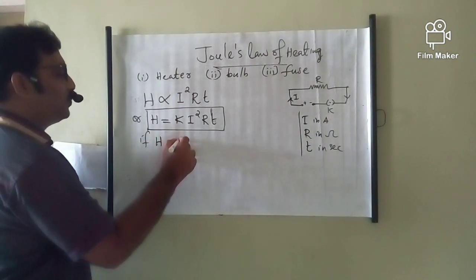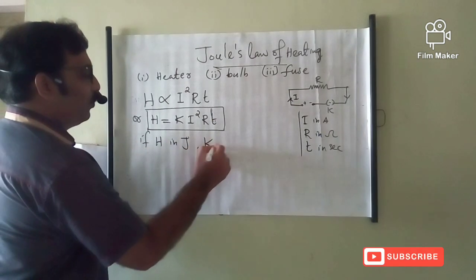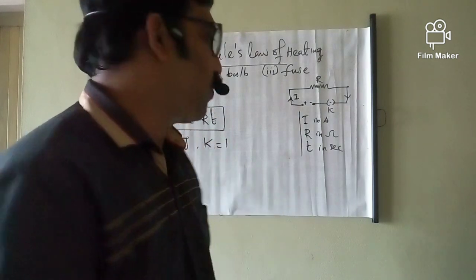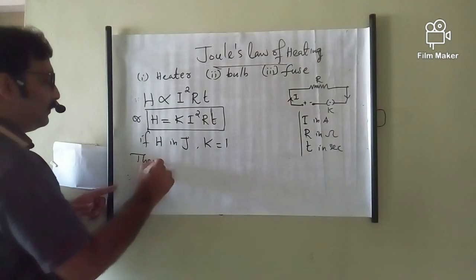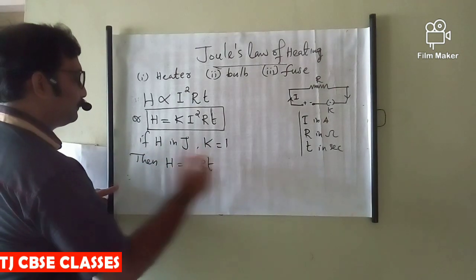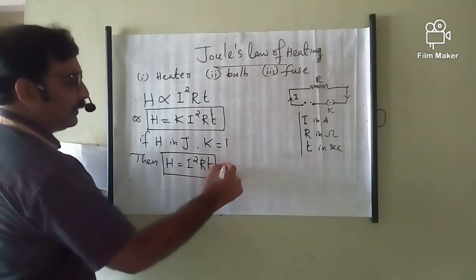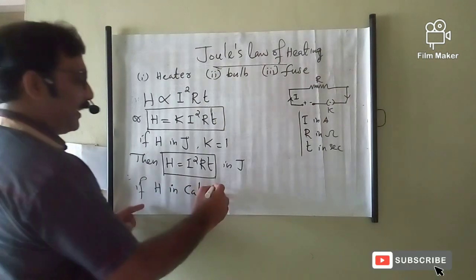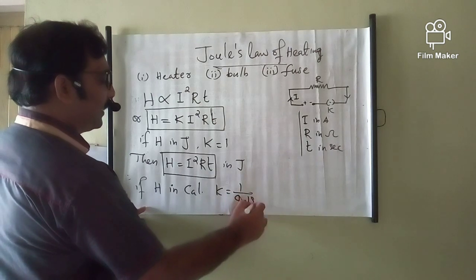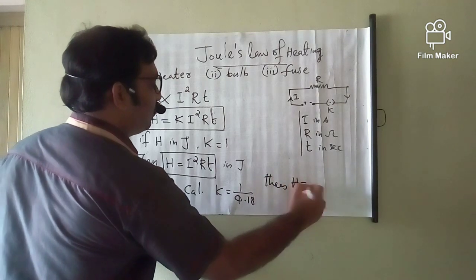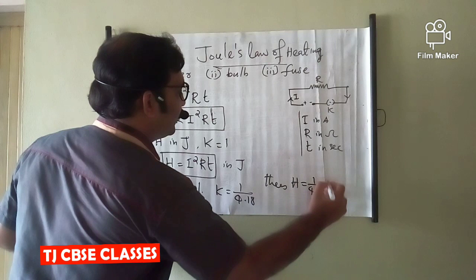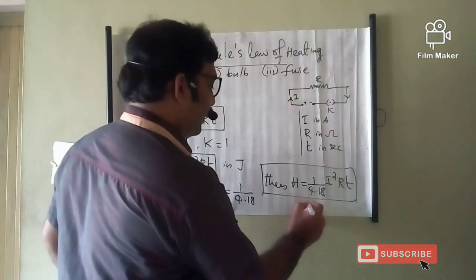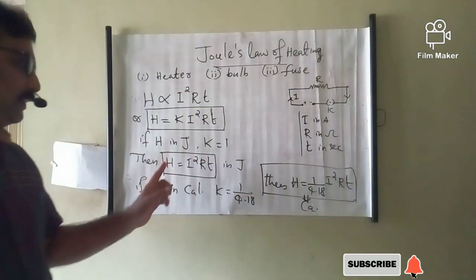If H is in joule, the value of K is equal to 1, where K is the proportionality constant. Then H is equal to I square RT, with H in joule. If H is in calorie, K is equal to 1 by 4.18. Then H is equal to 1 by 4.18 into I square RT, with H in calorie. These are the two important equations.